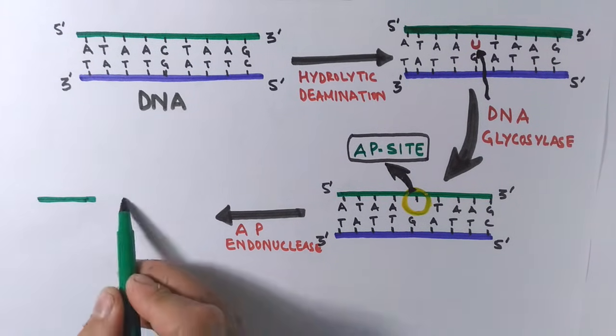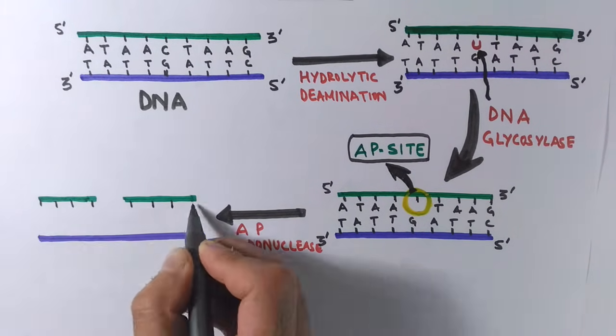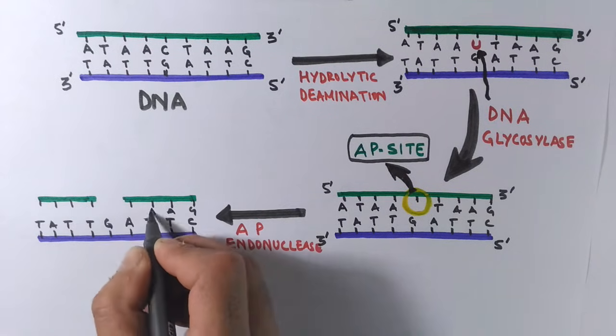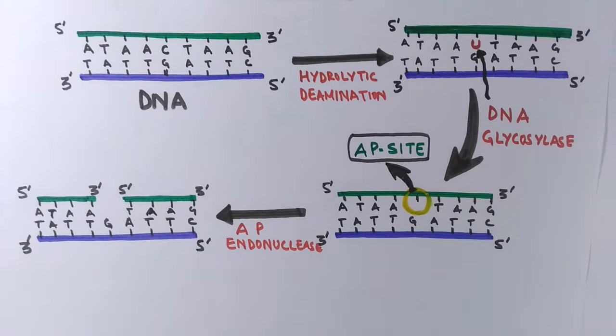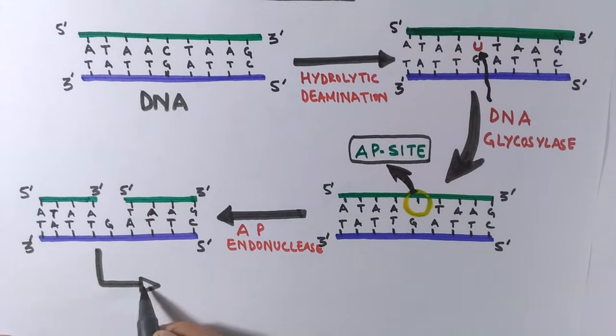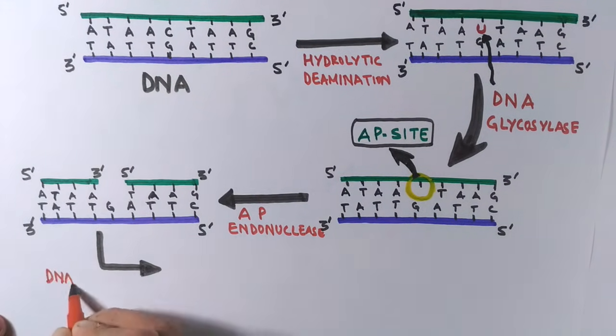After this, the AP site is recognized by AP endonuclease, which cleaves the AP site to yield a 3'-hydroxyl adjacent to a deoxyribose phosphate, as you can see in this diagram. Now we have a void in the DNA strand.